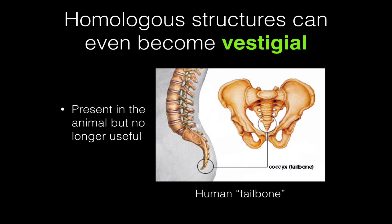Now, homologous structures can also become vestigial, which means they change so much that they become useless. But they are retained in the body as evidence of an ancestor that did have a functional part. For example, in humans, the very tip of our spine, which is called the coccyx, is a tiny little remnant of a tail. Well, it doesn't help us or harm us in any way, unless you fall on it and break it, but it doesn't function as a tail any longer. So it's an example of a vestigial structure in humans.